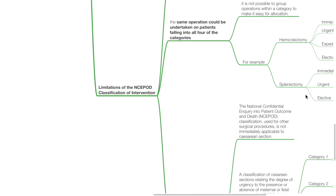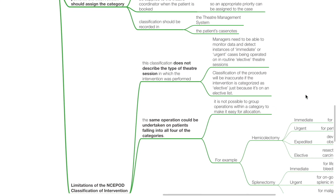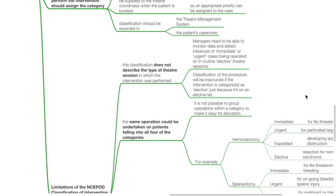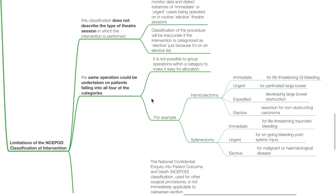Limitations of the NCEPOD classification of intervention: this classification does not describe the type of theatre session in which the intervention is performed. Managers need to be able to monitor data and detect instances of immediate or urgent cases being operated on in routine elective theatre sessions. Classification will be inaccurate if the intervention is classified as elective just because it is on an elective list. The same operation could be undertaken on patients falling into all four categories.